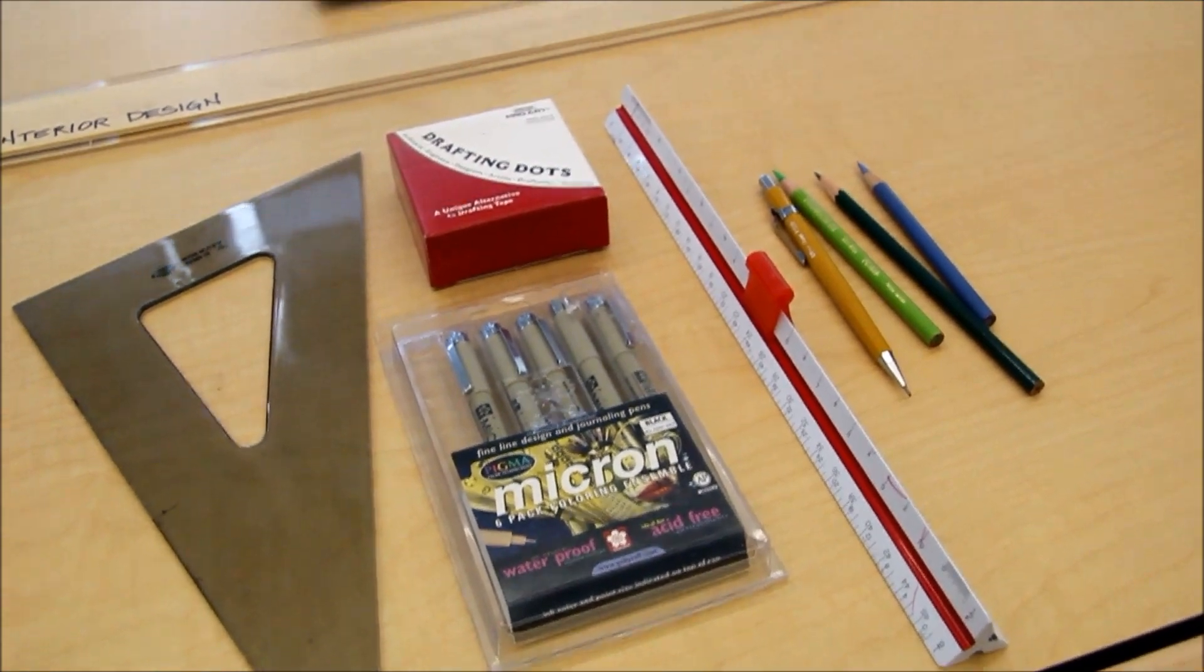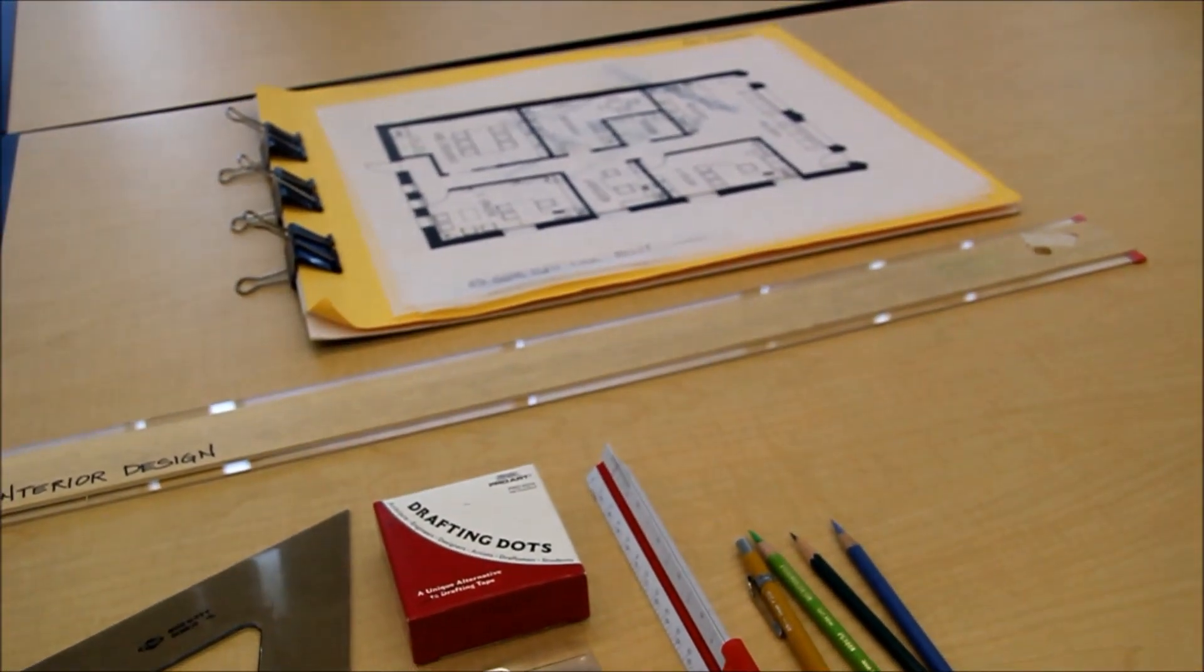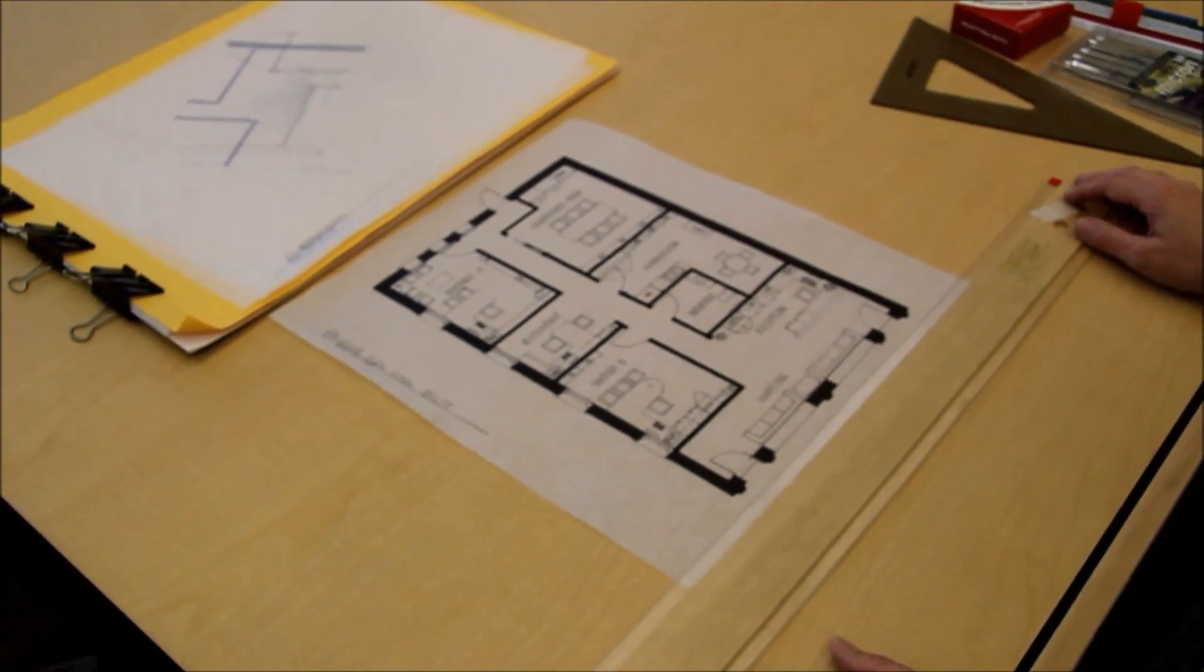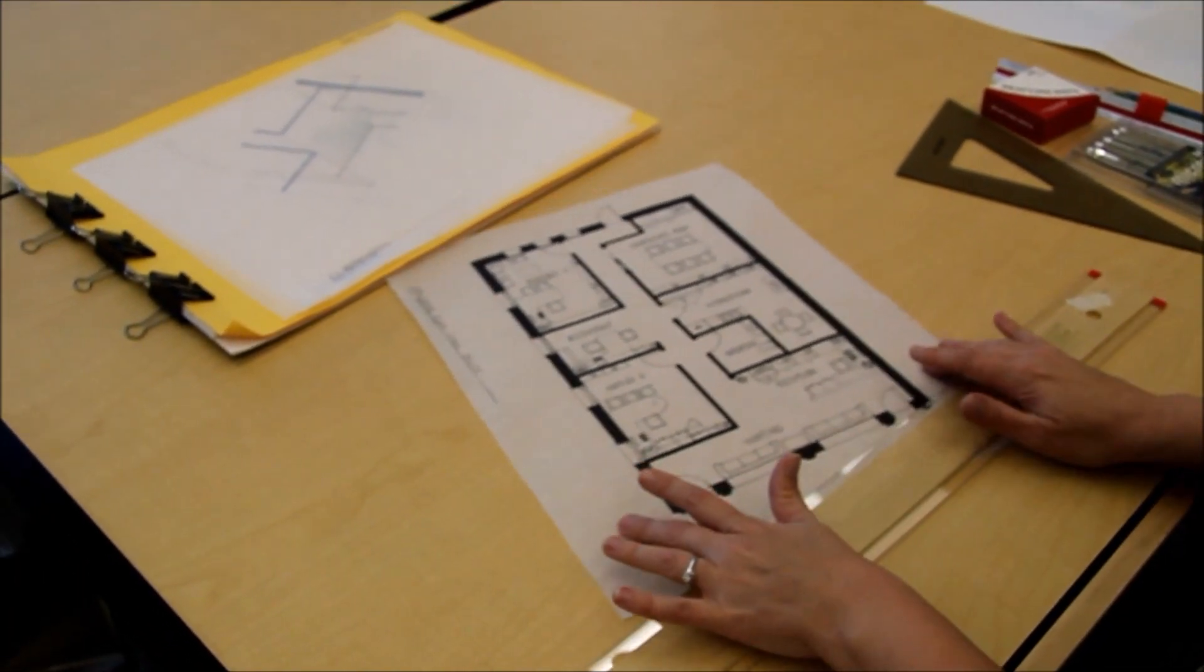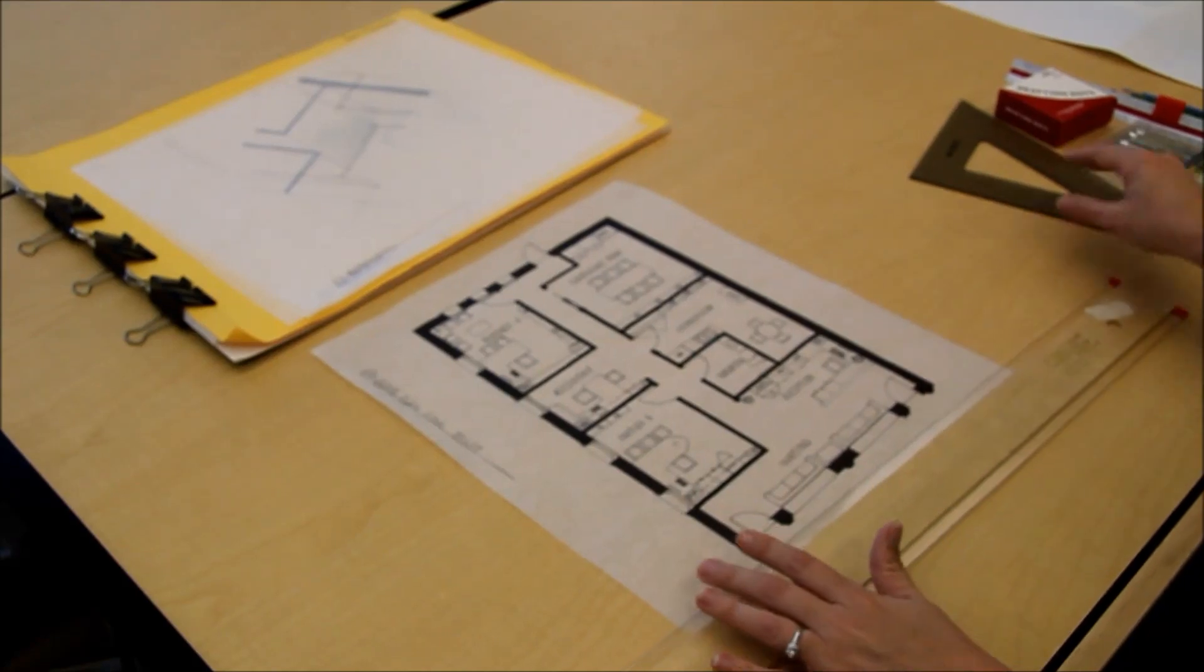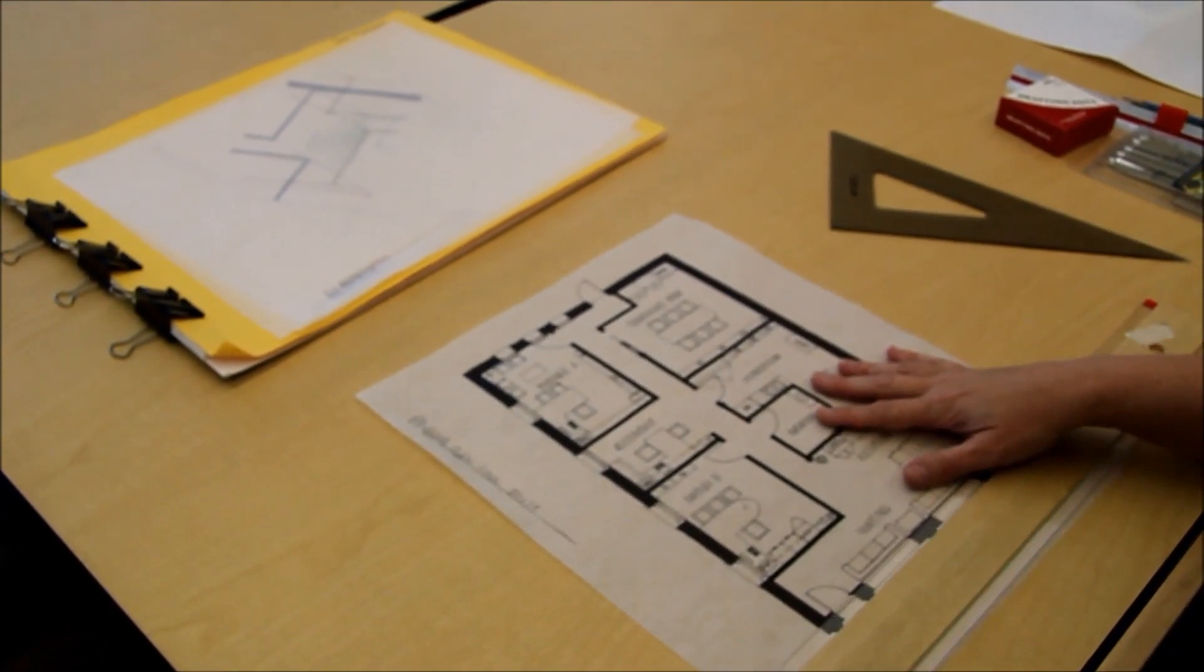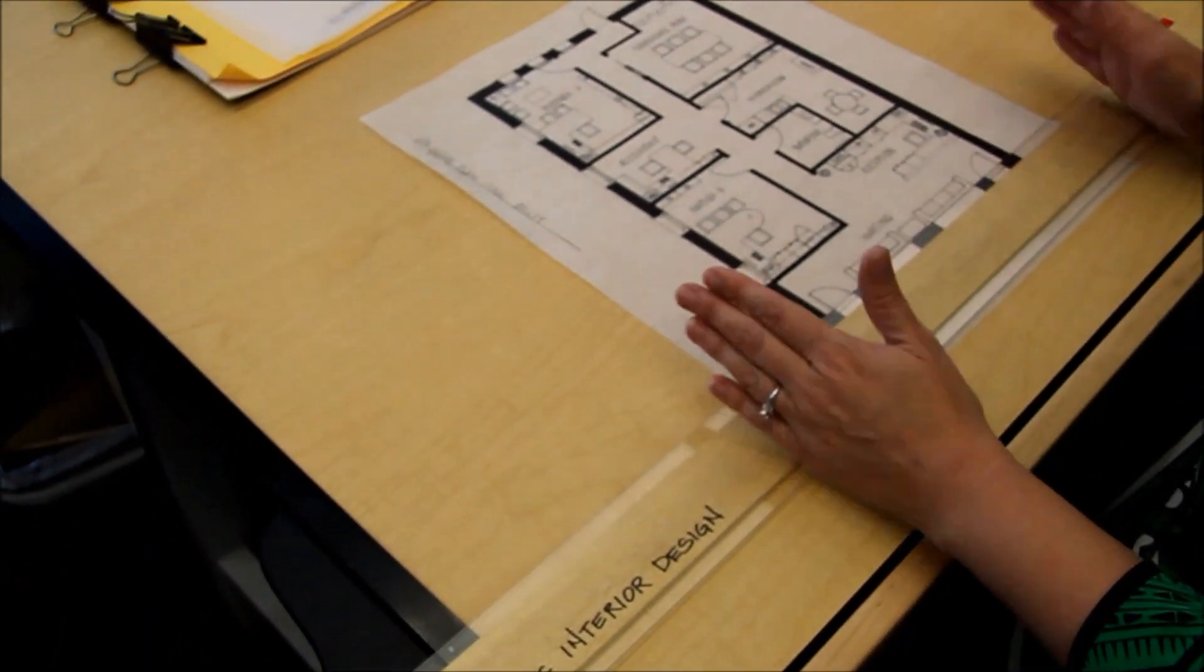So first thing we're going to do is grab the plan and tape it down. In this plan we are only drawing an axonometric view of the reception area, so we need to determine which angle is going to work best.